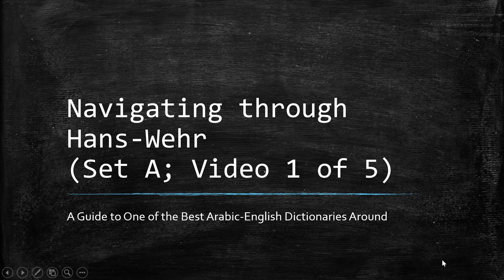Alhamdulillahi rabbil alameen wa salatu wa salam ala nabiyyina Muhammad wa ala alihi wa sahbihi. This is Imam Hanif. I wanted to take some time to explain the workings of the Hans Wehr Dictionary, which is the dictionary of choice for our Accessible Arabic classes. As we use that dictionary, it's important to know how the dictionary is set up and how to get the most out of it.